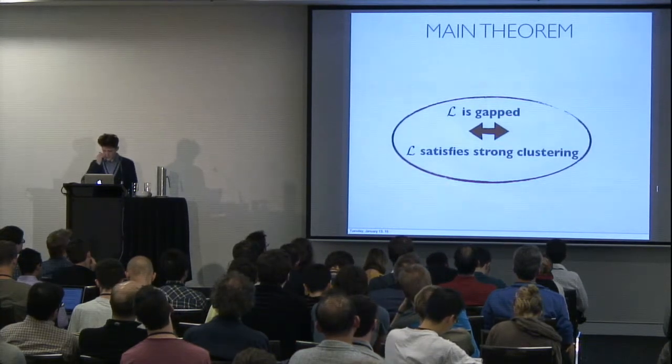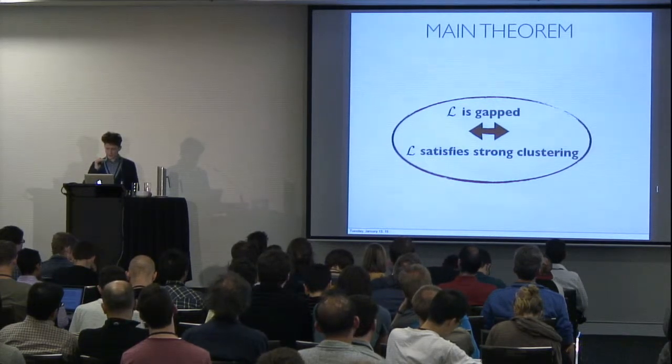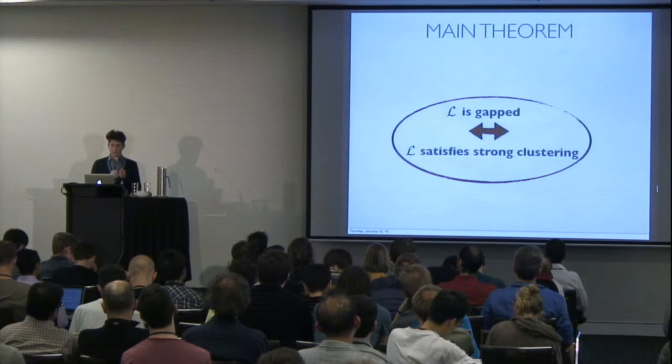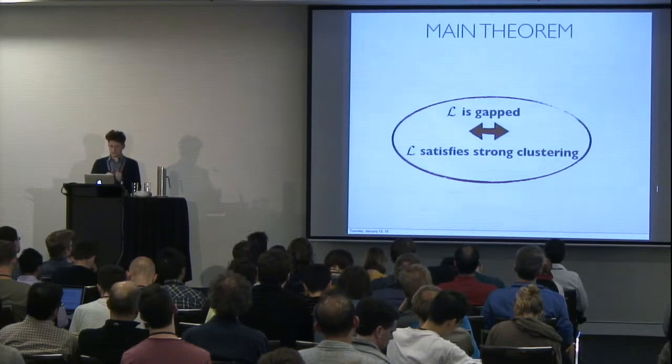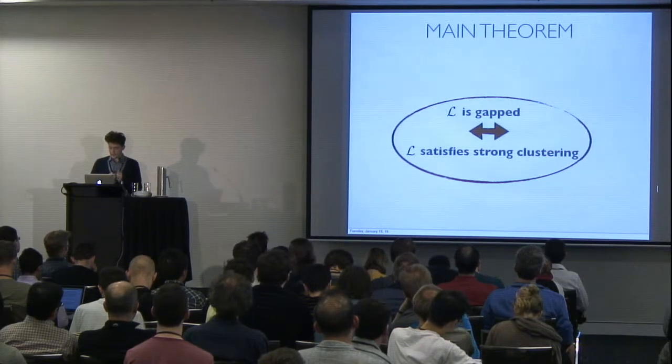Okay, back to the main theorem. Better way of saying, the more precise way of stating the main theorem is given a Gibbs sampler, which is a constructive, it's a constructive construction. If it is gapped,